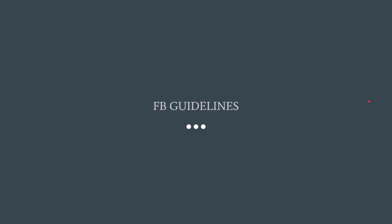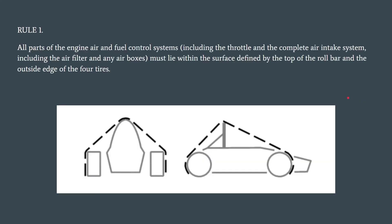Let's start with the intake manifold guidelines that we must follow in our competition. The first rule states that all air and fuel control system components including the throttle, the entire air intake system, and the air filter must be located within the surface defined by the top of the roll bar and the outside edge of the four wheels — that is, all these parts should come within this region in our car.